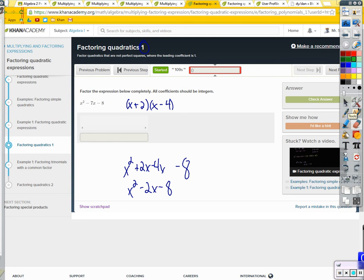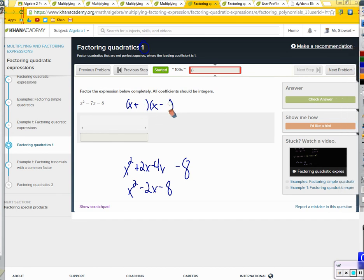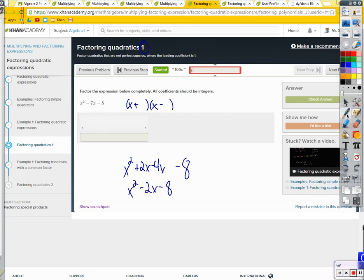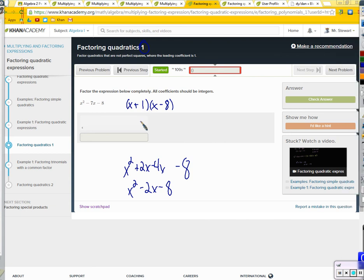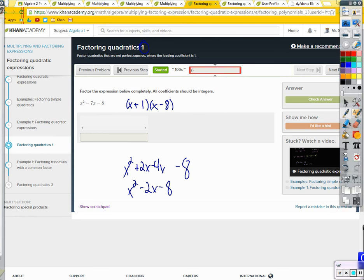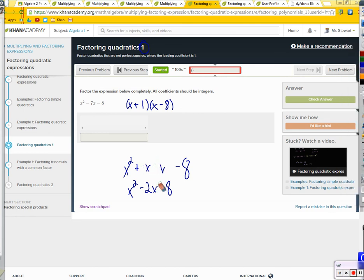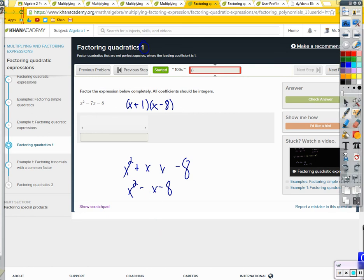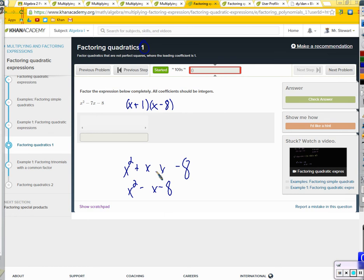And it may take you a little bit of trial and error, messing around with it. Thinking, what can I multiply to make negative 8? Then add together to make negative 7. So we can arrive at x plus 1, x minus 8. Great. That does give me negative 8. That gives me just an x minus 8x. I get a positive x and a negative 8x. Negative 7x total.